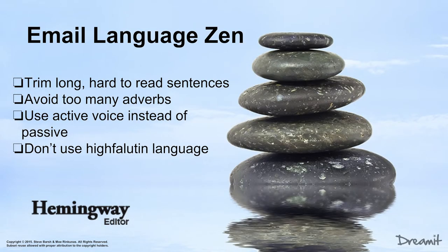When writing the text of your email, some language zen to think about: try to trim long, hard-to-read sentences. Really try to be concise and to the point. Avoid too many adverbs. Use the active voice instead of the passive voice — if you don't remember that from high school English, just look it up. Be careful of highfalutin language where you're using so much inside-baseball terminology nobody really understands. There are websites like Hemingway.com that you can throw an email into and it will give you feedback on the quality of the text. If it's a really important email, I'll typically go to somebody I trust and say, could you give this a quick read?